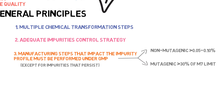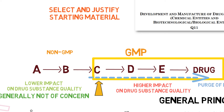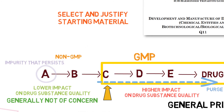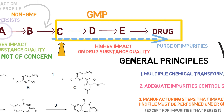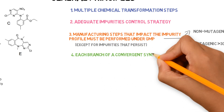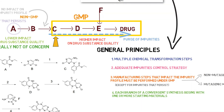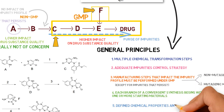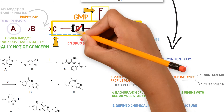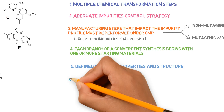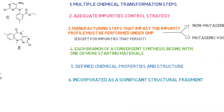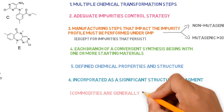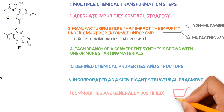An exception is impurities that persist. An impurity that persists is formed in initial stages before the starting material, but followed by steps which are not critical and do not impact the impurity profile. The step immediately upstream of the proposed starting material should be demonstrated to not impact the impurity profile. Each branch of a convergent synthesis begins with one or more starting materials, and GMP must be applied to each branch beginning with the first use of a starting material. A starting material should have defined chemical properties and structure, so non-isolated intermediates are not appropriate starting materials. A starting material is incorporated as a significant structural fragment into the structure of the drug substance. Commodities are generally acceptable as starting materials, as long as it is proven that they are sold in a non-pharmaceutical market.